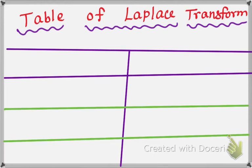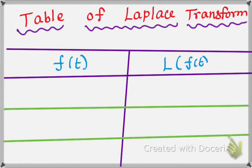Dear students, we will now talk about one function — the Laplace transform. For example, this is f of t, this is a function. Our answer is L of f of t, the Laplace transform of f of t. Let me prove it.